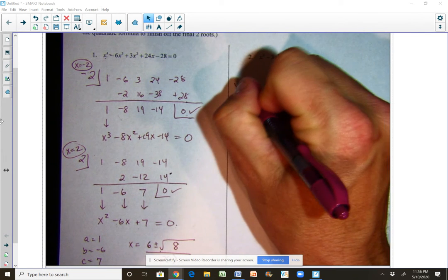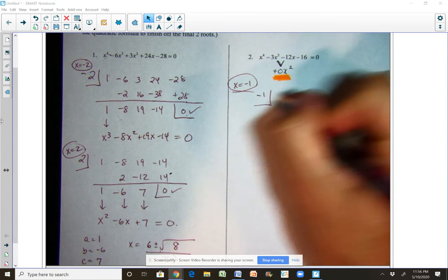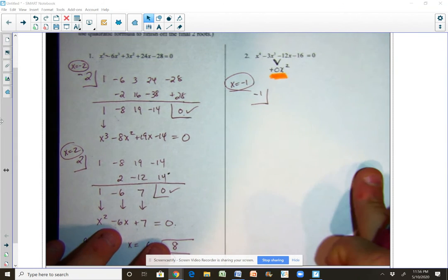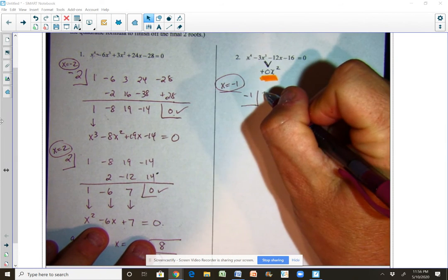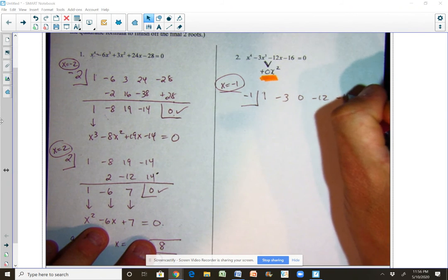So if we take out, we know x equals negative 1 as a root, so if we use negative 1 synthetically and we write out our synthetic division process, what we'll have here is coefficients of 1, minus 3, 0, minus 12, and minus 16.